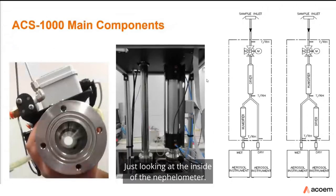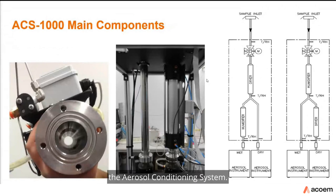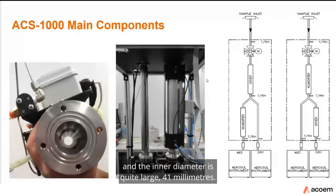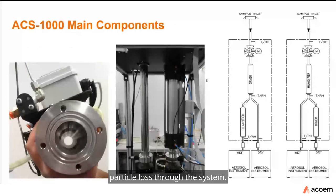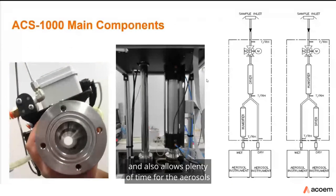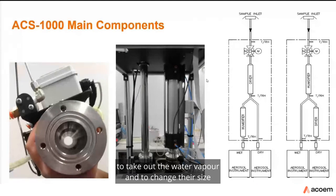Inside the aerosol conditioning system, it is made of electropolished stainless steel with a relatively large inner diameter of 41 mm. This ensures minimum particle loss through the system and allows plenty of time for aerosols to take up water vapor and change their size and state as they pass through.